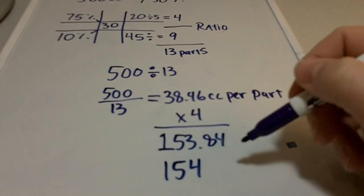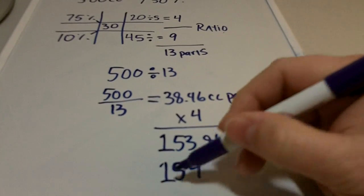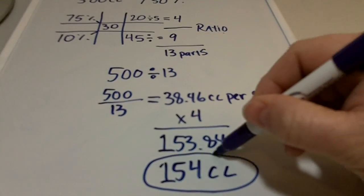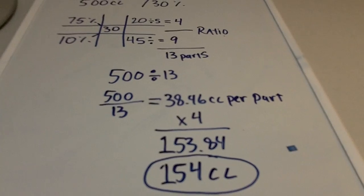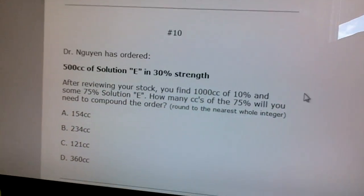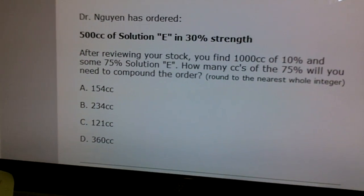It's anything this way of the decimal rounded up. So that's our answer. It's 154 cc. And if we go back to our question, that is answer A.